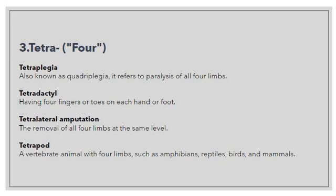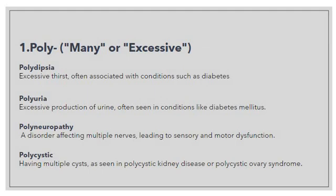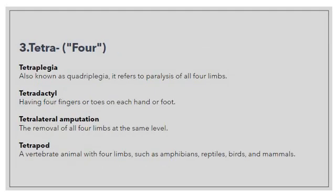Then we have 'tetrapod', which means a vertebrate animal with four limbs, such as amphibians, reptiles, birds, and mammals. Whenever we denote vertebrate animals with four limbs, we use the terminology 'tetrapod' with the prefix 'tetra'. So to summarize today's prefixes: 'poly' for many or excessive, 'quadri' for four, and 'tetra' also for four — since tetra and quadri are alternatives of each other.